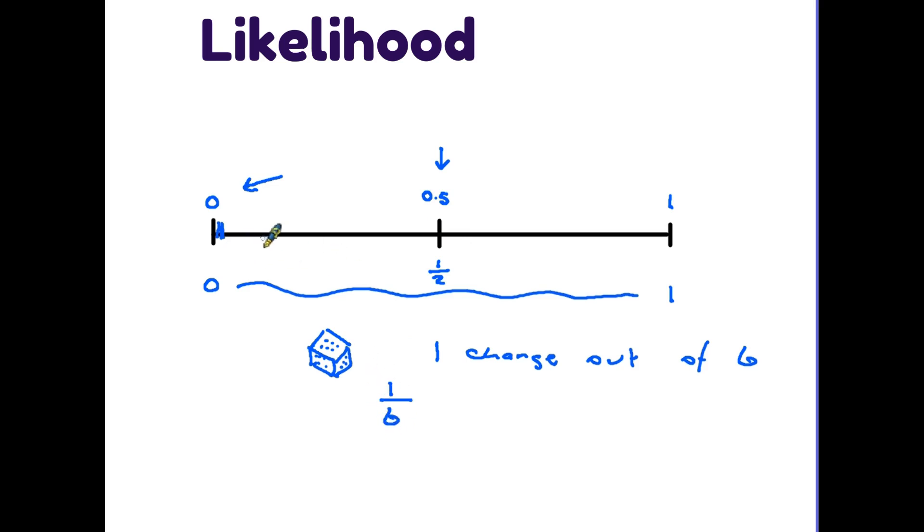And of course one sixth will be quite low on our line here because it is less than half chance that you would get the particular number that you're looking for. The words unlikely and likely are applied to probability. So anything that is less than half chance is unlikely and anything that is higher than half chance we say it is likely. So the closer to one the more likely. The closer to zero the less likely it is that something's going to happen.